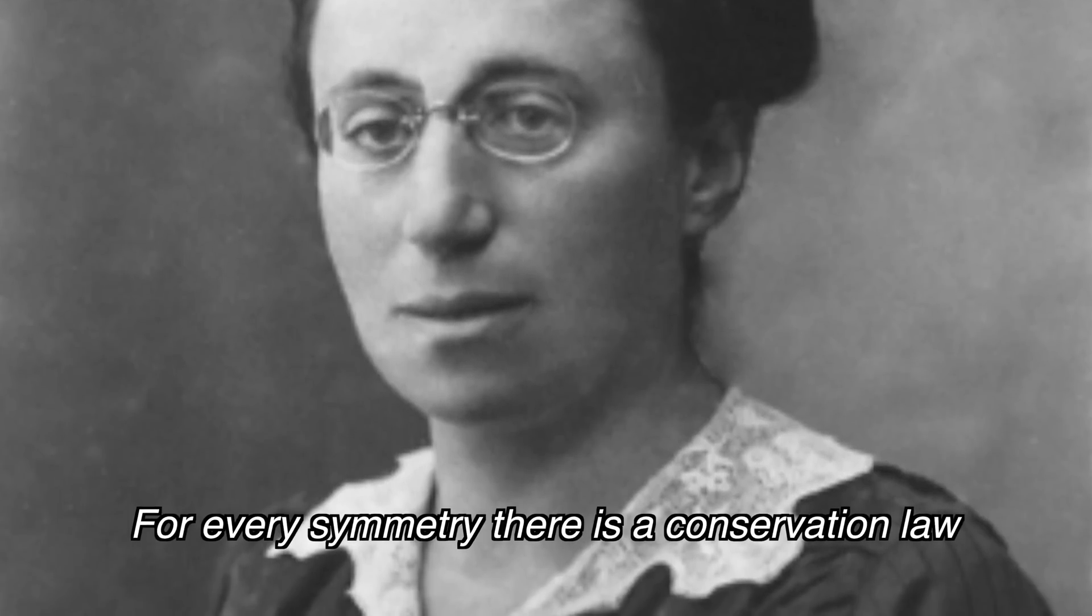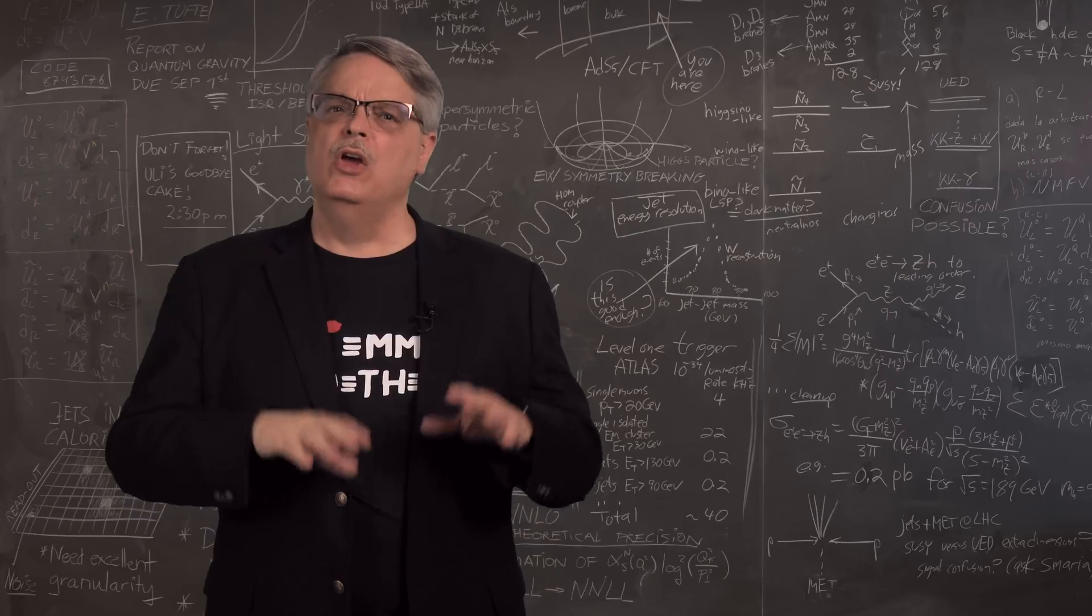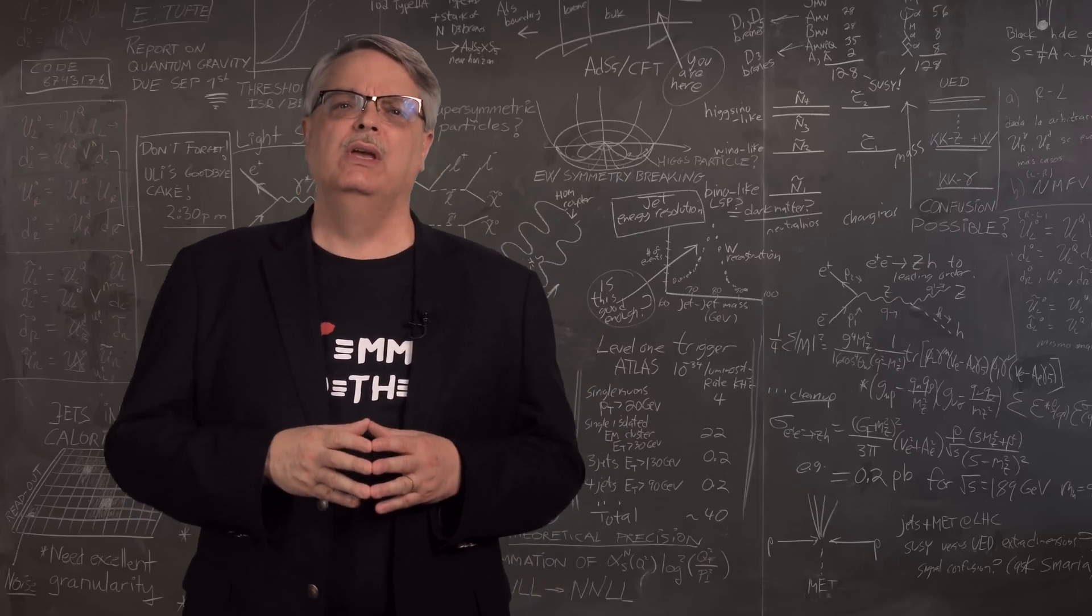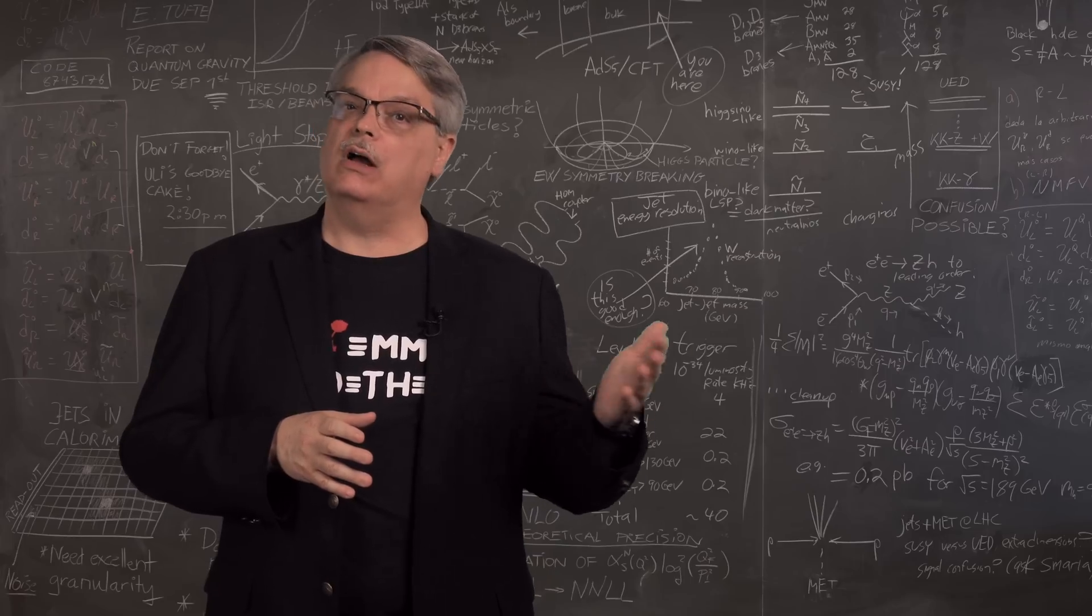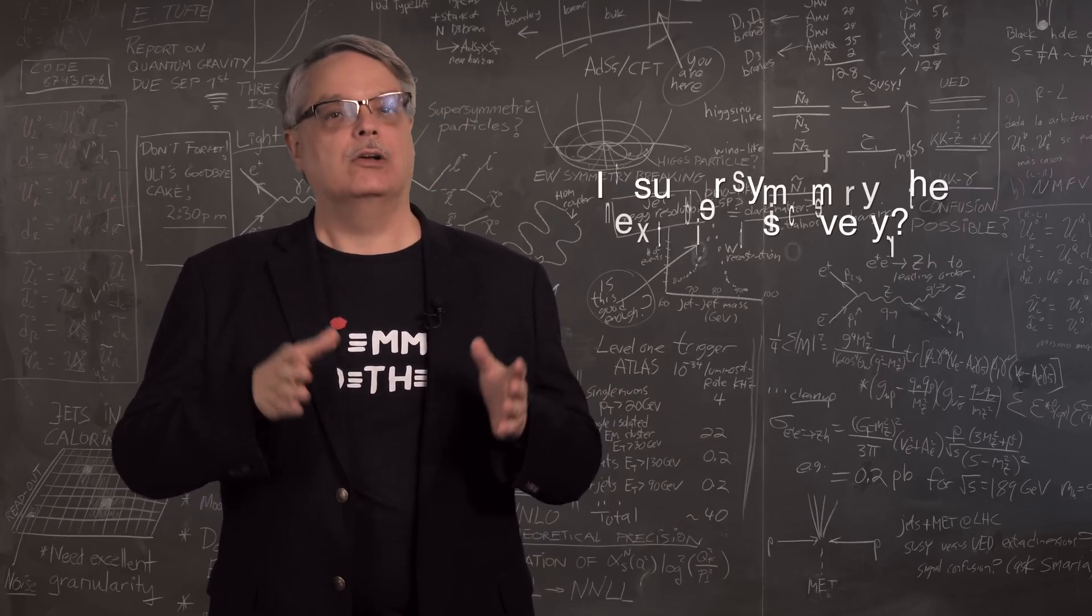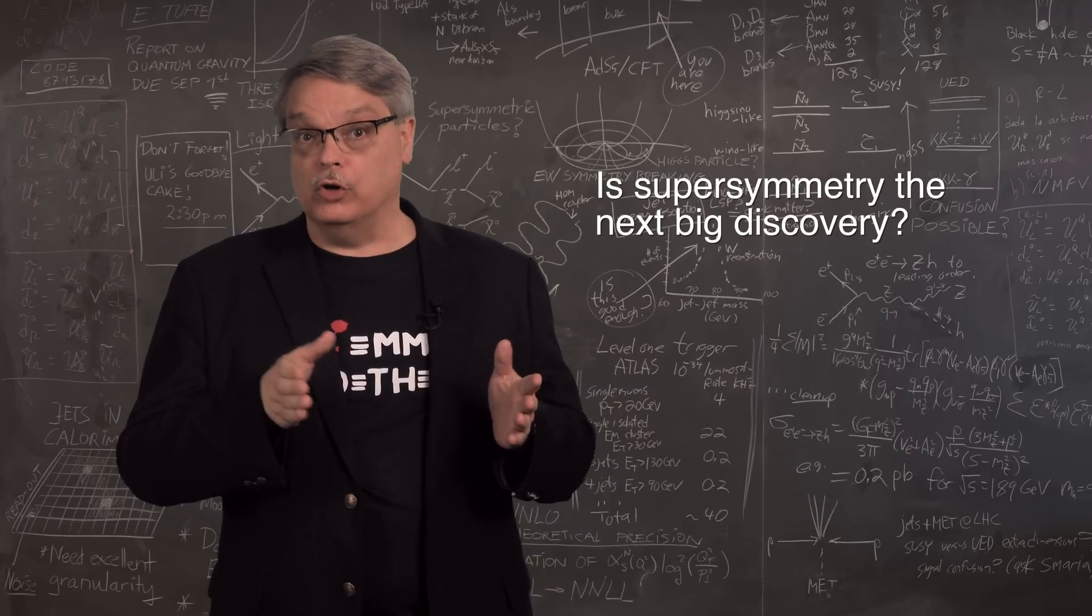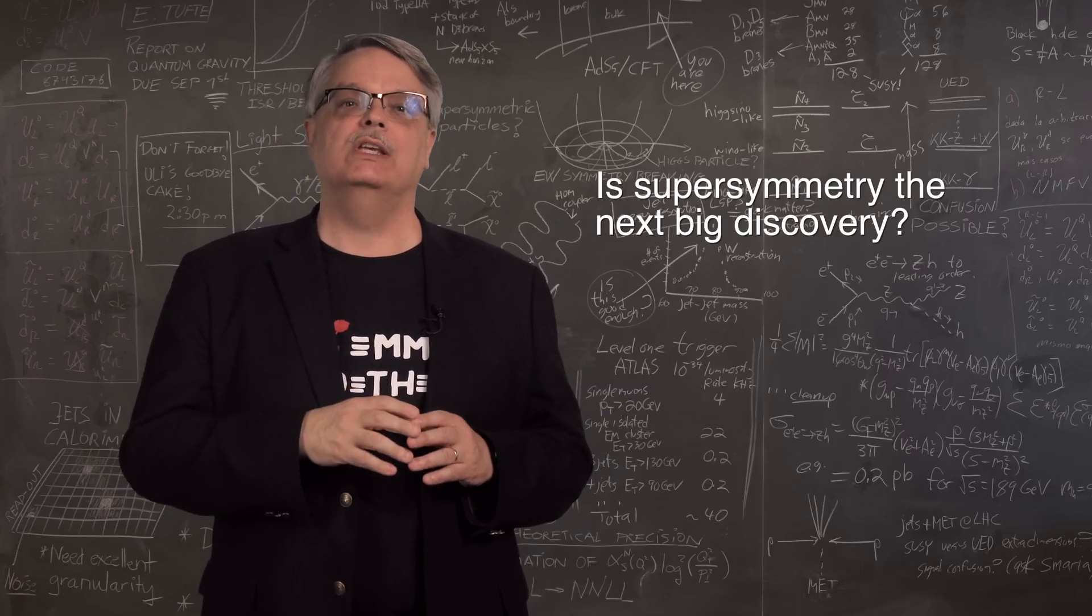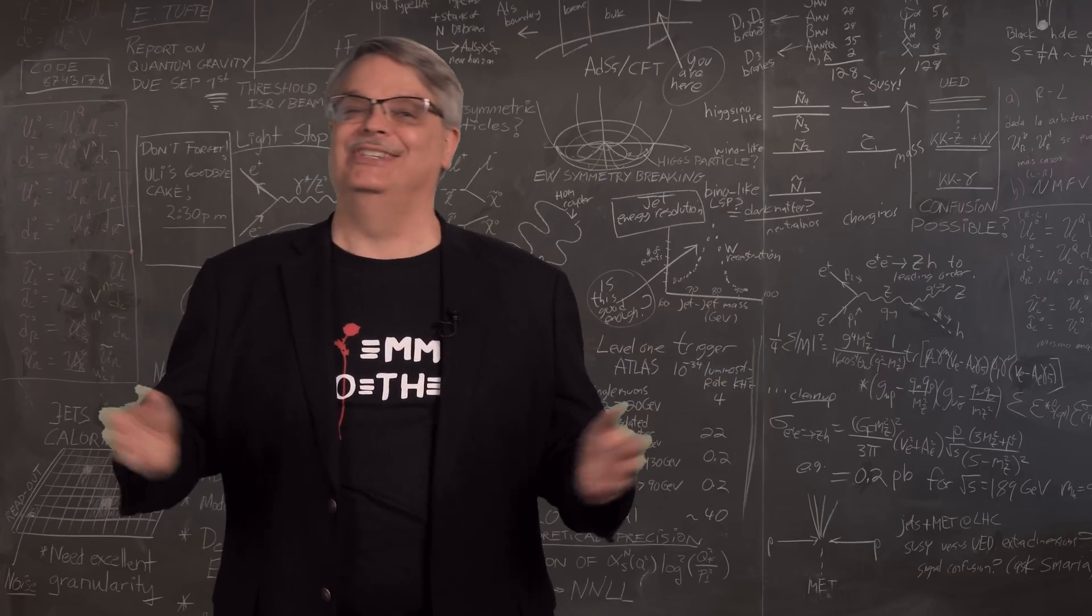For any of a particular class of symmetries, there is a conservation law. Her theorem is relevant to modern day searches for new physics. One of the most popular ideas for extending our current understanding of the laws of physics involves an idea called supersymmetry. And supersymmetry, if it's real of course, has a conserved quantity. Finding that conserved quantity is one of the ways we'll know that we find supersymmetry when we see it. Well, if we see it.